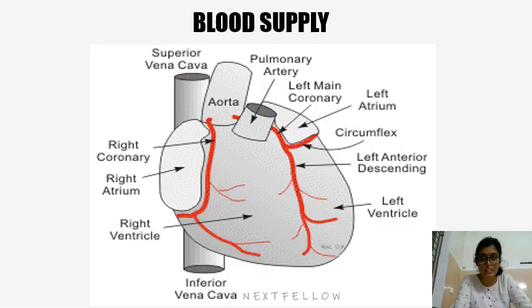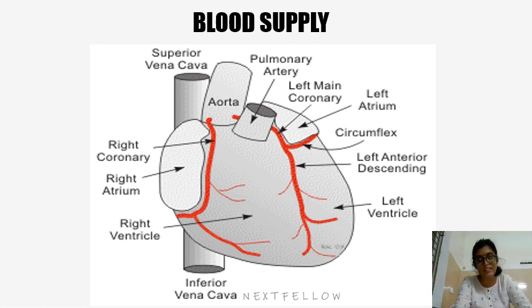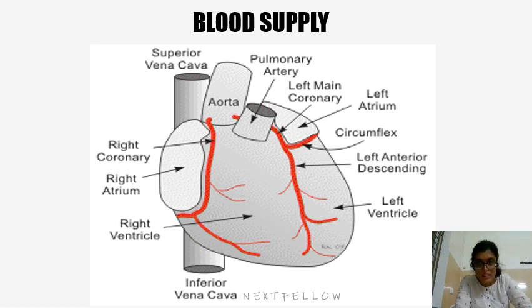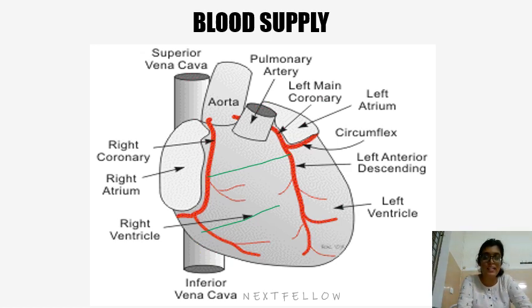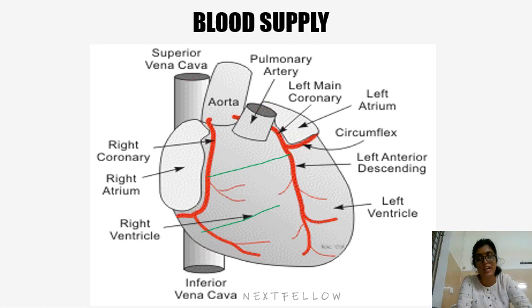Coming to the blood supply of the heart, it is supplied by the right coronary artery and the left coronary artery. The right coronary artery gives two branches: the SA nodal artery and the right coronary artery, which then gives the right marginal artery. It goes posteriorly and gives the posterior descending artery. The artery that gives the posterior descending artery is the dominant artery, mostly the RCA in the majority of subjects. But it can also come from the circumflex artery, in which case the left coronary artery is the dominant artery.